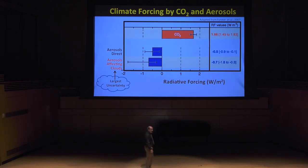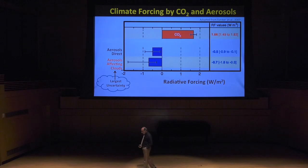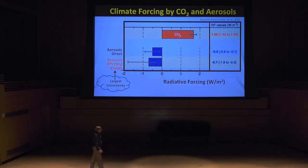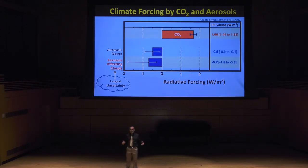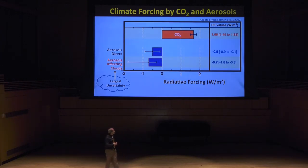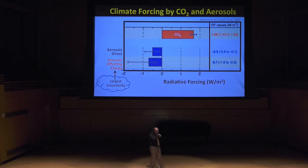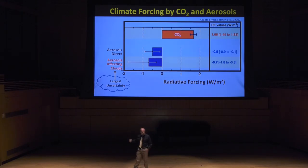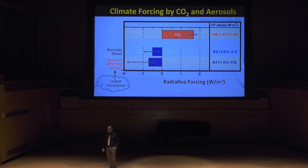We've all heard about the greenhouse effect, climate change, global warming, and the effect of CO2. By adding CO2 to the atmosphere we are increasing the greenhouse effect and making our atmosphere warmer. I want to use that as an example to give you another perspective. The CO2 greenhouse effect is on the order of two watts per square meter — that's what's warming up the planet due to human pollution.